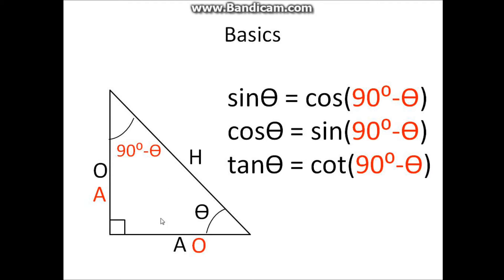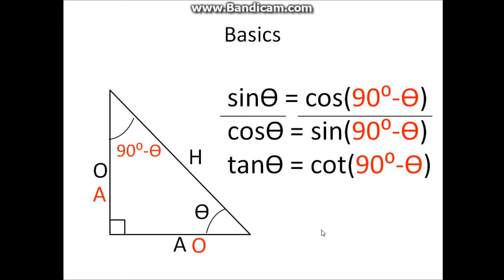Cosine theta — it's the same. It's A over H. For 90 degrees minus theta, it is actually the opposite line divided by H, which is sine of 90 degrees minus theta. Tangent theta — you just divide sine by cosine, and you get cosine of 90 degrees minus theta divided by sine of 90 degrees minus theta, which gives you 1 over tangent of 90 degrees minus theta. And hence, that's it for the basics of the ratios of the triangle.